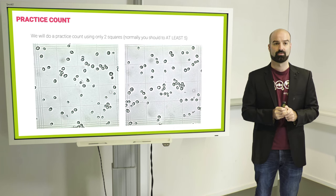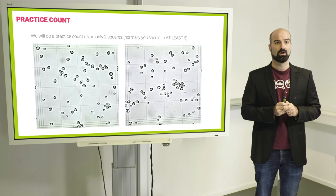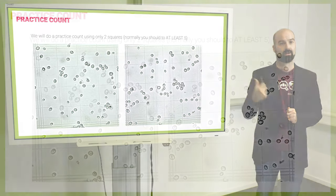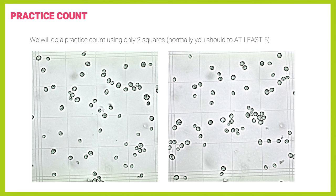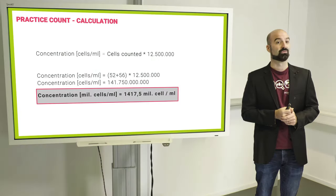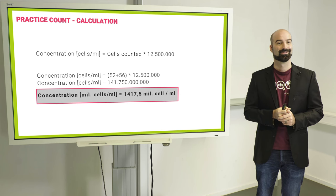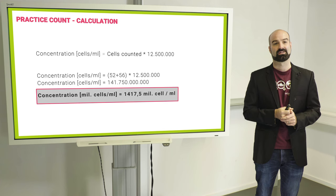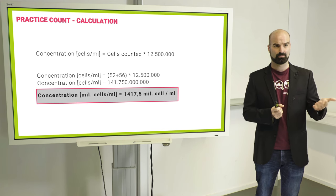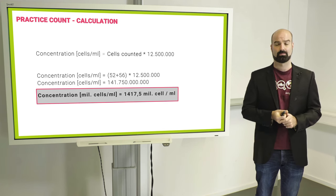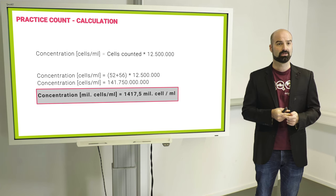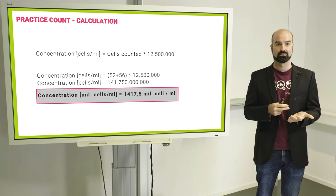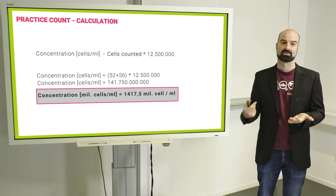And so here's an example of a grid with cells that you should be counting based upon the rules that were shown a slide before and that you're probably familiar with. If you're following along, which I strongly suggest, please just pause the video, take your time, count these cells and then we can compare what you come up with. So if you counted correctly, you should get 52 cells in the one image and 56 cells in the other image. If you add that up, you get 108. And if you multiply that by the 12.5 million, you get to 1,417 million cells per milliliter.